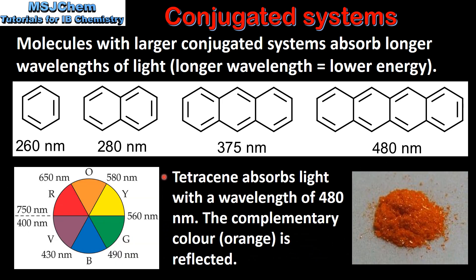Because of its large conjugated system, tetracene absorbs light with a wavelength of 480 nm. The complementary color, which is orange, is reflected. By looking at the color wheel we can see that tetracene absorbs blue light and reflects the complementary color which is orange, and this explains why tetracene is an orange powder.